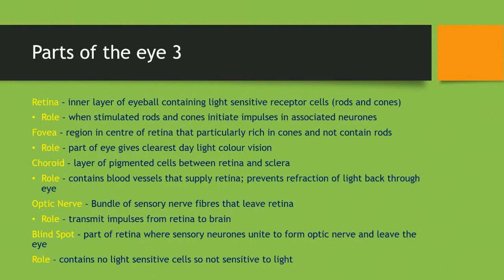The choroid is a layer of pigmented cells between the retina and the sclera. Its role is to contain blood vessels that supply the retina and also to prevent reflection of light back through the eye. The optic nerve is a bundle of sensory nerve fibres that leave the retina and transmit impulses from the retina to the brain. Finally, the blind spot is a part of the retina where sensory neurons unite to form the optic nerve — it contains no light-sensitive cells and is therefore not sensitive to light.